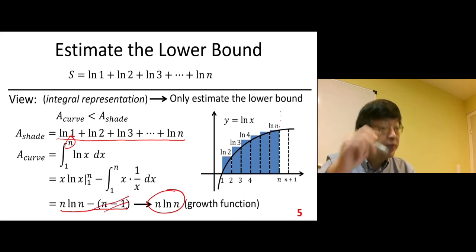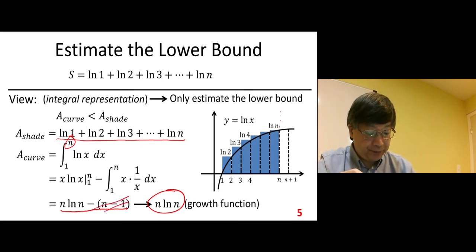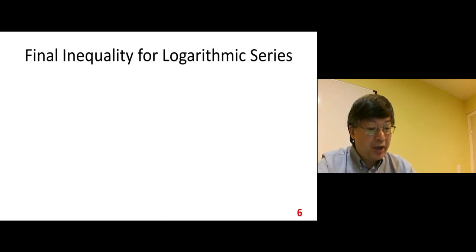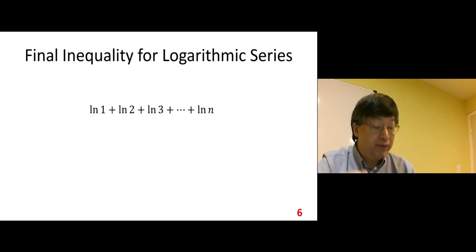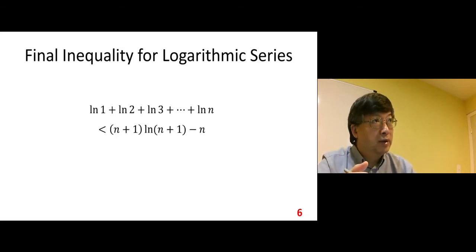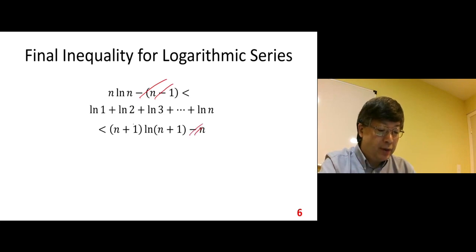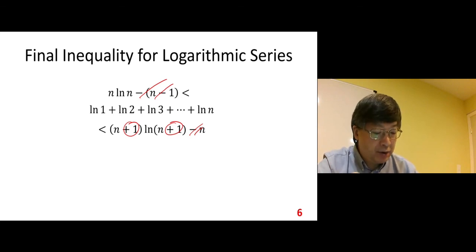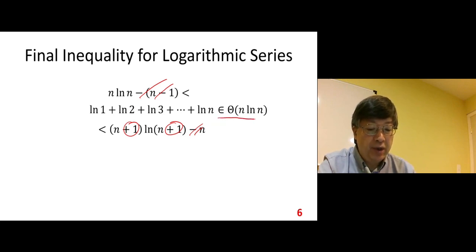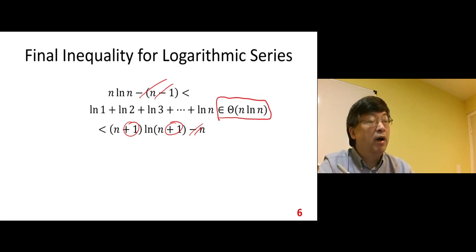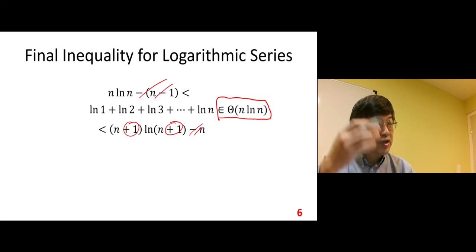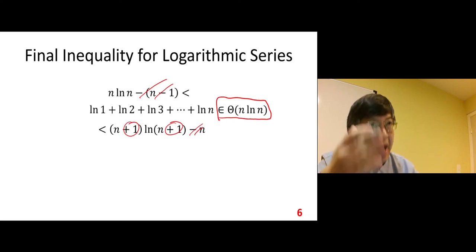Combining the two sides together — the final inequality from lower bound and upper bound — we have this expression. The minor terms can be ignored, and we get the whole expression in big-theta of n log n. So that's about the efficiency analysis of the heap sort. We complete the analysis part and we complete the whole heap sort.